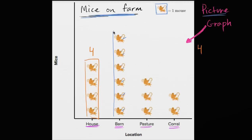So there are six mice, six mice in the barn. So there's six mice in the barn. Let me just write that down. So six mice in the barn.